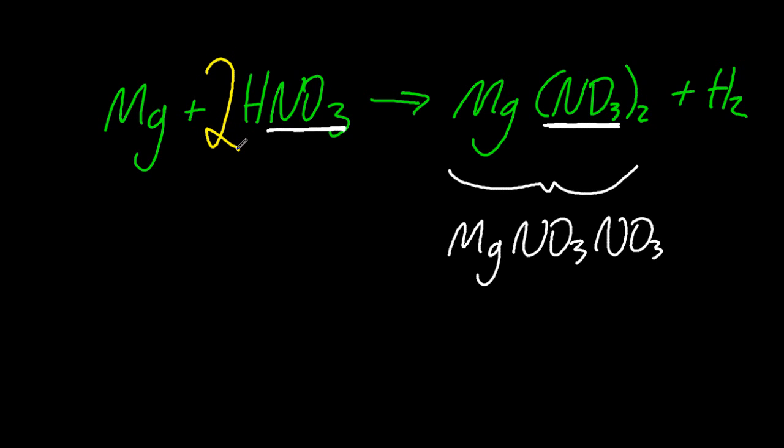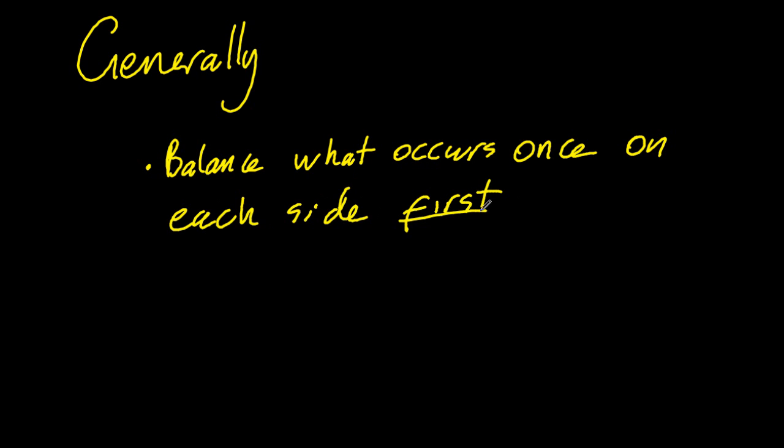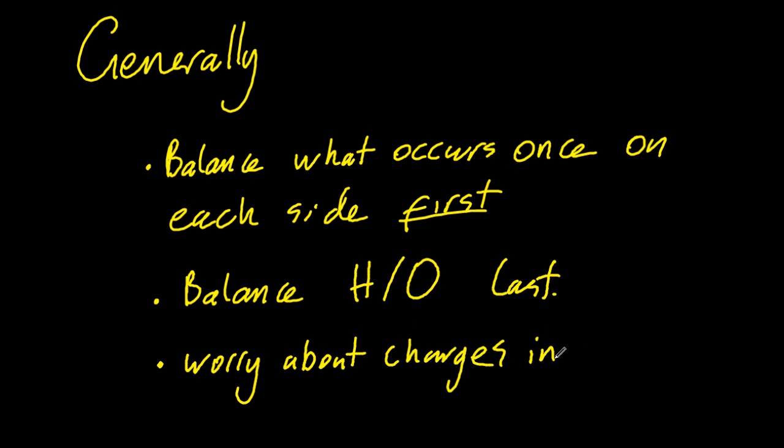General rules: I don't think there is one rule in chemistry without an exception, but generally for balancing, balance what occurs once on each side first, balance hydrogen and oxygen last, and worry about the charges when you get to the redox unit.